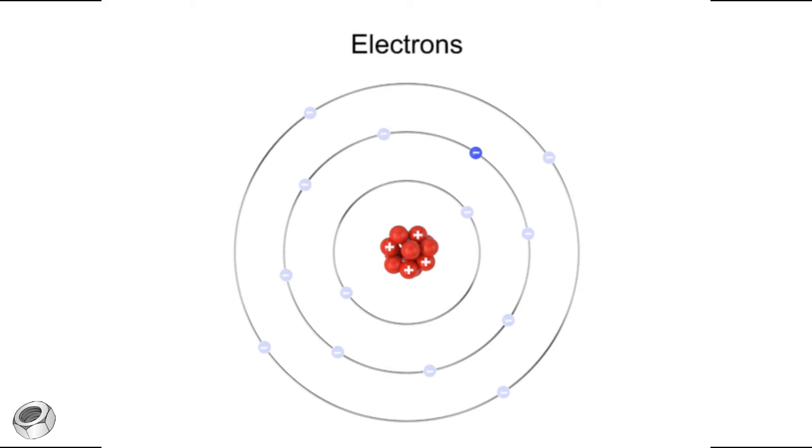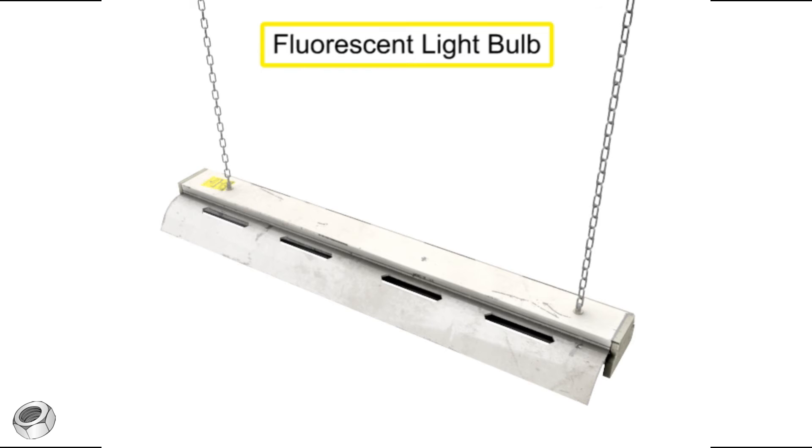This repeating sequence of electron excitation followed by de-excitation is the basis for the functional capacity of a fluorescent light bulb.